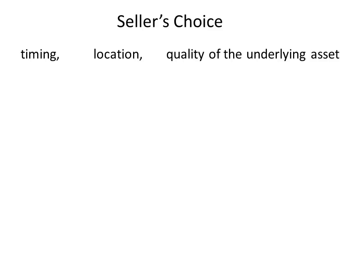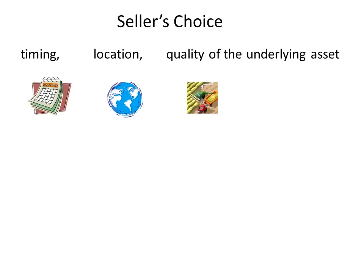The seller of the futures contract has a choice when deciding when to deliver — at the beginning, middle, or end of a particular delivery month. Sellers can also choose where in the world they may wish to deliver, for example, in a port in Rotterdam, São Paulo, or Singapore. The futures contract also allows a choice of underlying asset quality. For crops, quality can vary enormously depending on where they're grown. Similarly, crude oil varies enormously whether derived from the North Sea, Texas, the Middle East, or Russia.